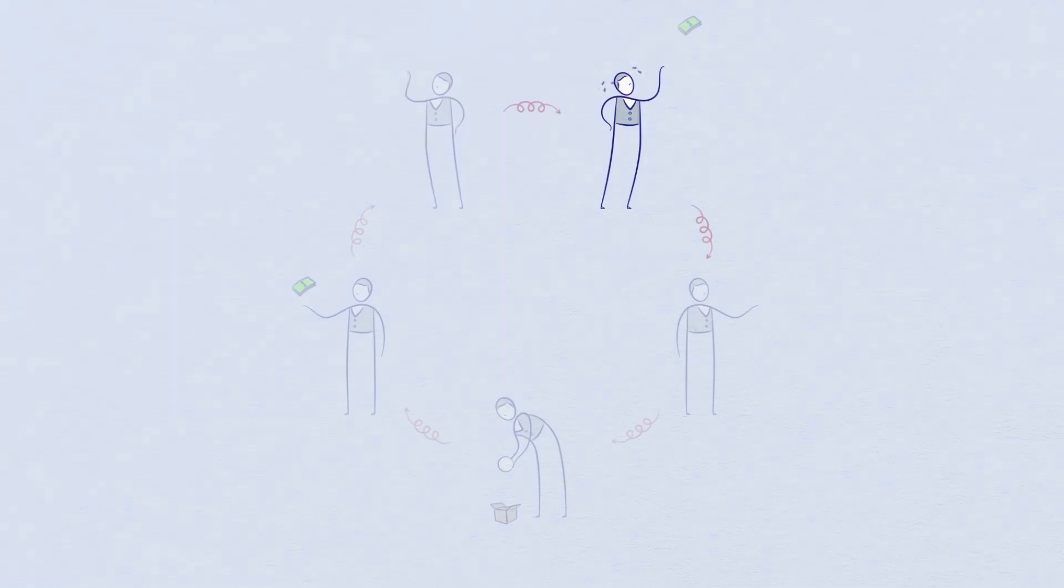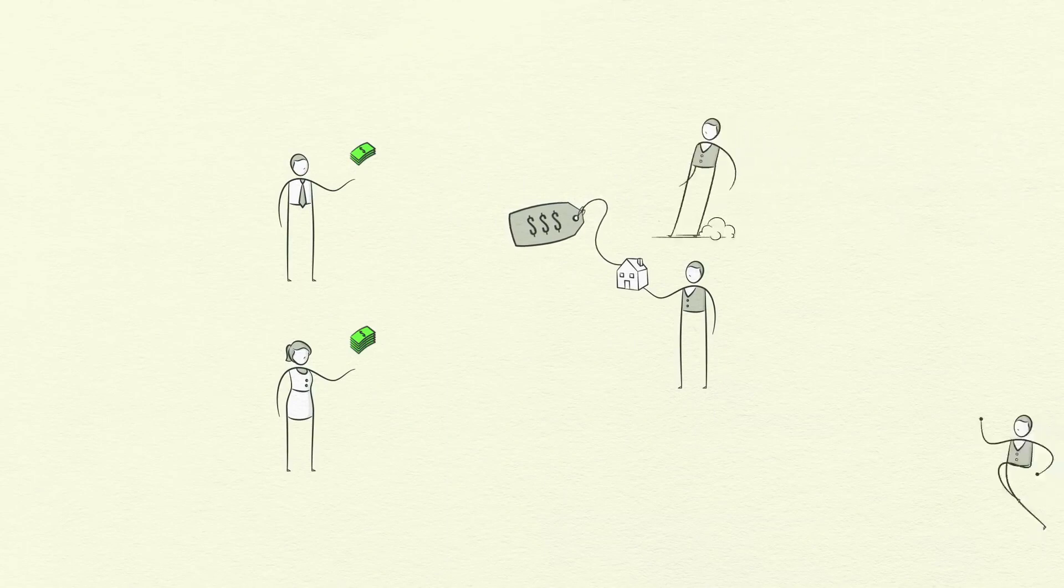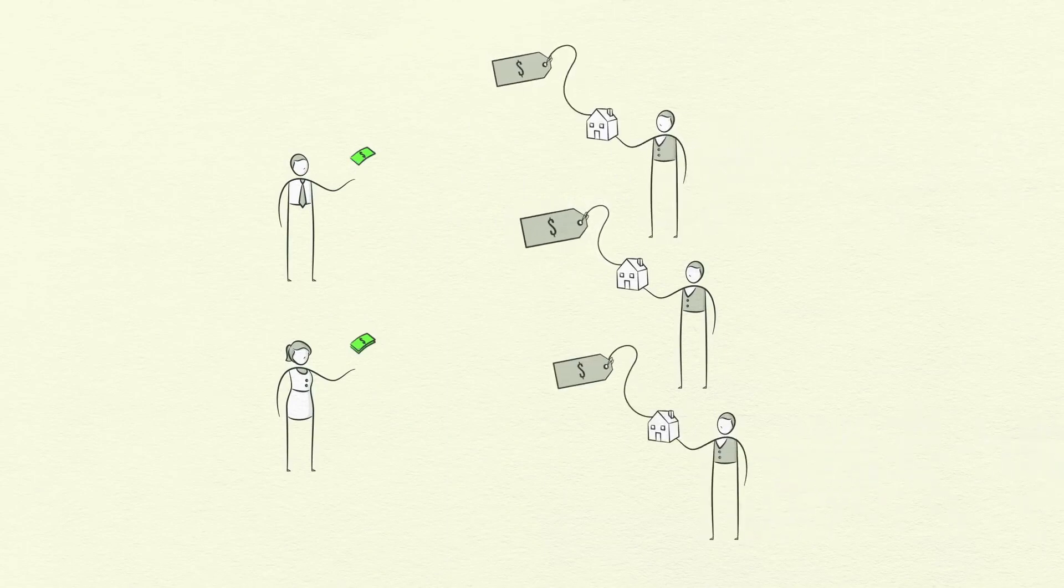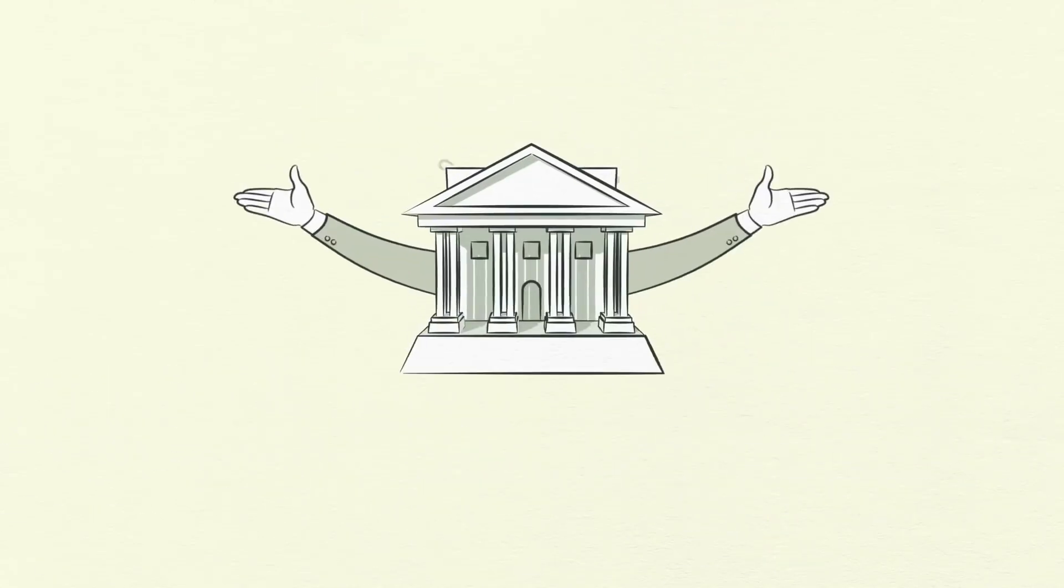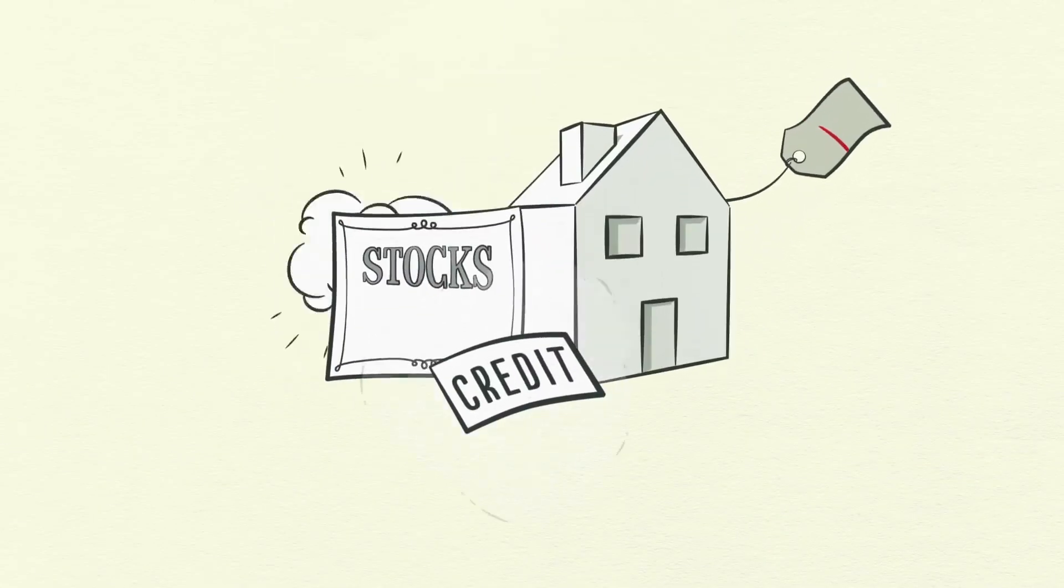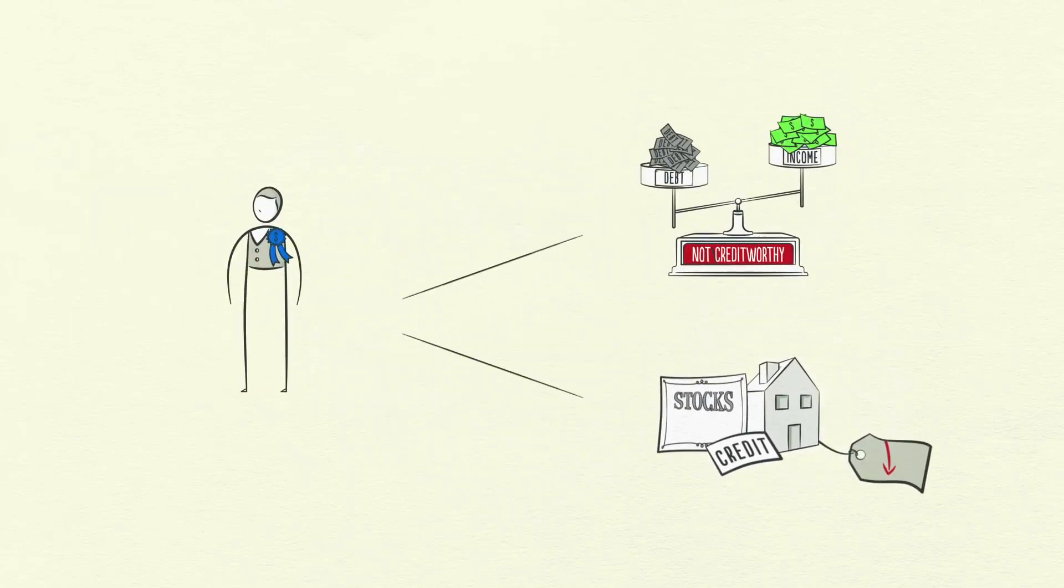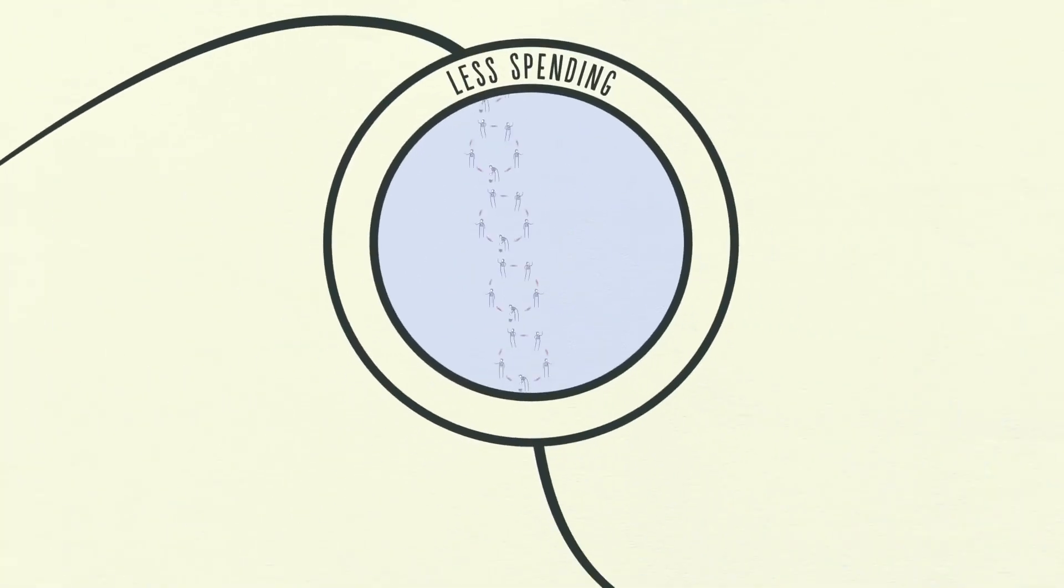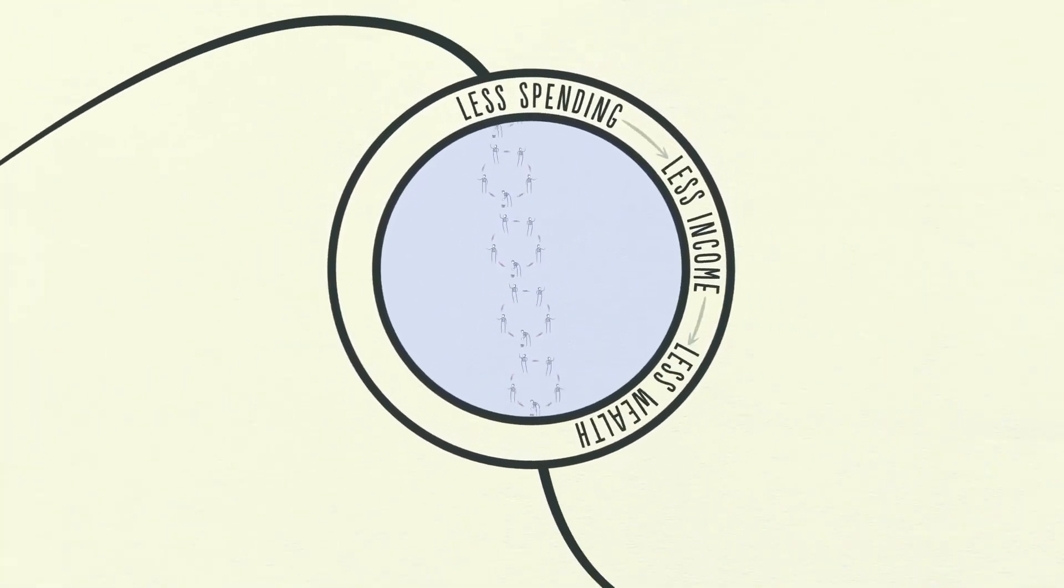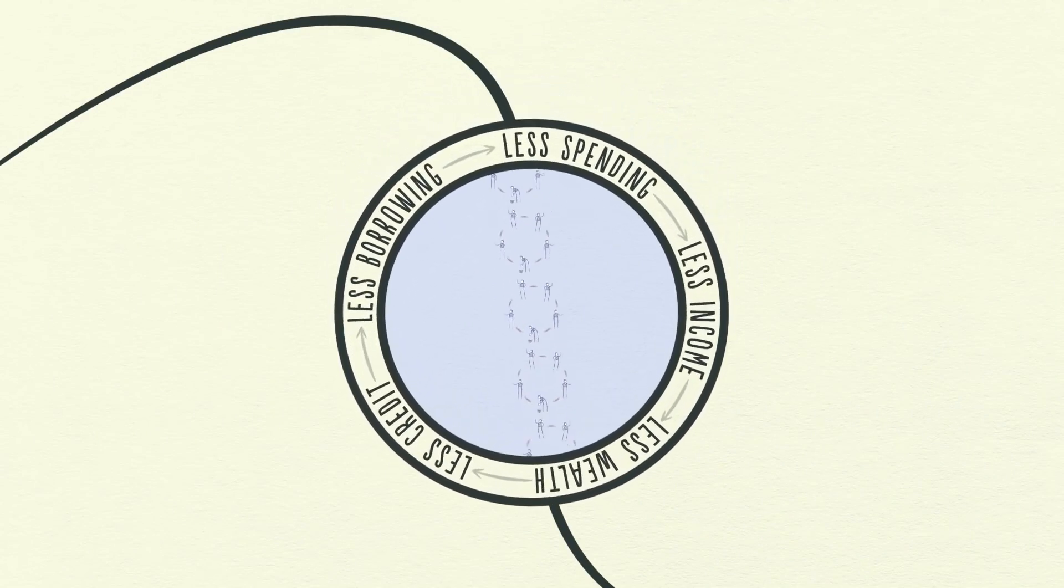Scrambling to fill this hole, borrowers are forced to sell assets. The rush to sell assets floods the market at the same time as spending falls. This is when the stock market collapses, the real estate market tanks, and banks get into trouble. As asset prices drop, the value of the collateral borrowers can put up drops. This makes borrowers even less creditworthy. People feel poor. Credit rapidly disappears. Less spending, less income, less wealth, less credit, less borrowing, and so on. It's a vicious cycle.